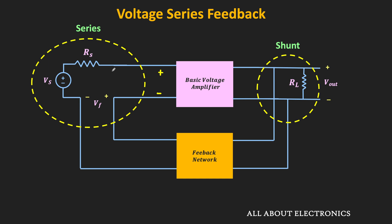Applying KVL in this loop, the input voltage Vin equals Vs minus Vf. This means whenever we want to subtract two voltage sources, the input side must have a series connection. In general, when we want to sample the voltage, the output side must have a shunt connection. And on the mixing side, when we want to add or subtract voltages, it must be a series connection.